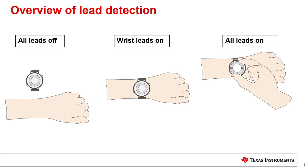On the other hand, whenever an all-leads-on configuration is detected, the ECG signal chain can be powered on and ECG signal acquisition can be started. In addition to determining leads-on and leads-off configurations, it might also be useful to determine the strength of the contact to the leads. Such a determination could, for example, be used to alert the user to make better contact to the electrodes.